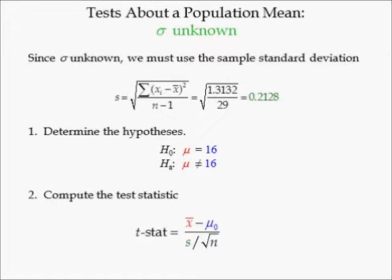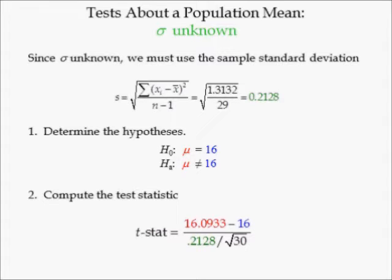In step 2, the test statistic is computed. Since sample mean x-bar equals 16.093333, the hypothesized value of the population mean is 16, the sample standard deviation is equal to 0.2128, and the sample size is 30. The t-stat is equal to 2.40.